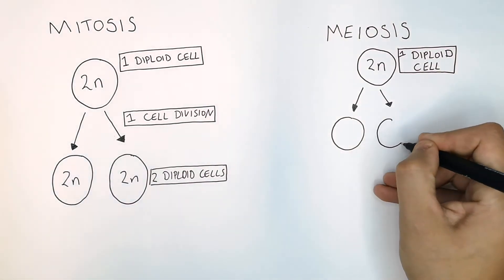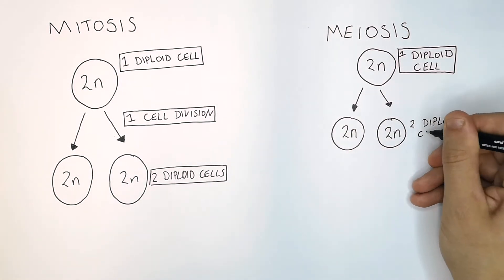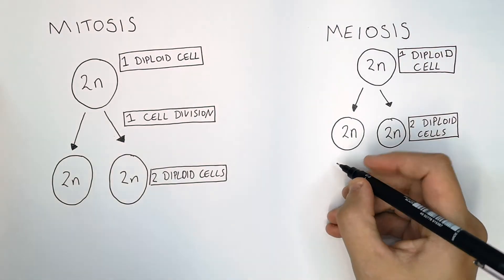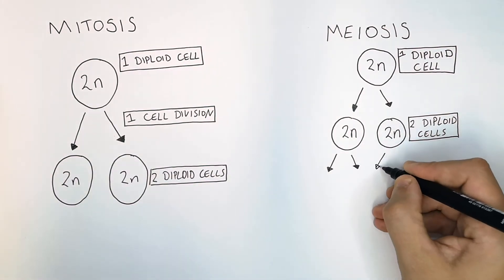It divides for a first time to form two diploid cells. So two diploid cells are formed. This is where meiosis is different from mitosis. These two diploid cells divide once more.